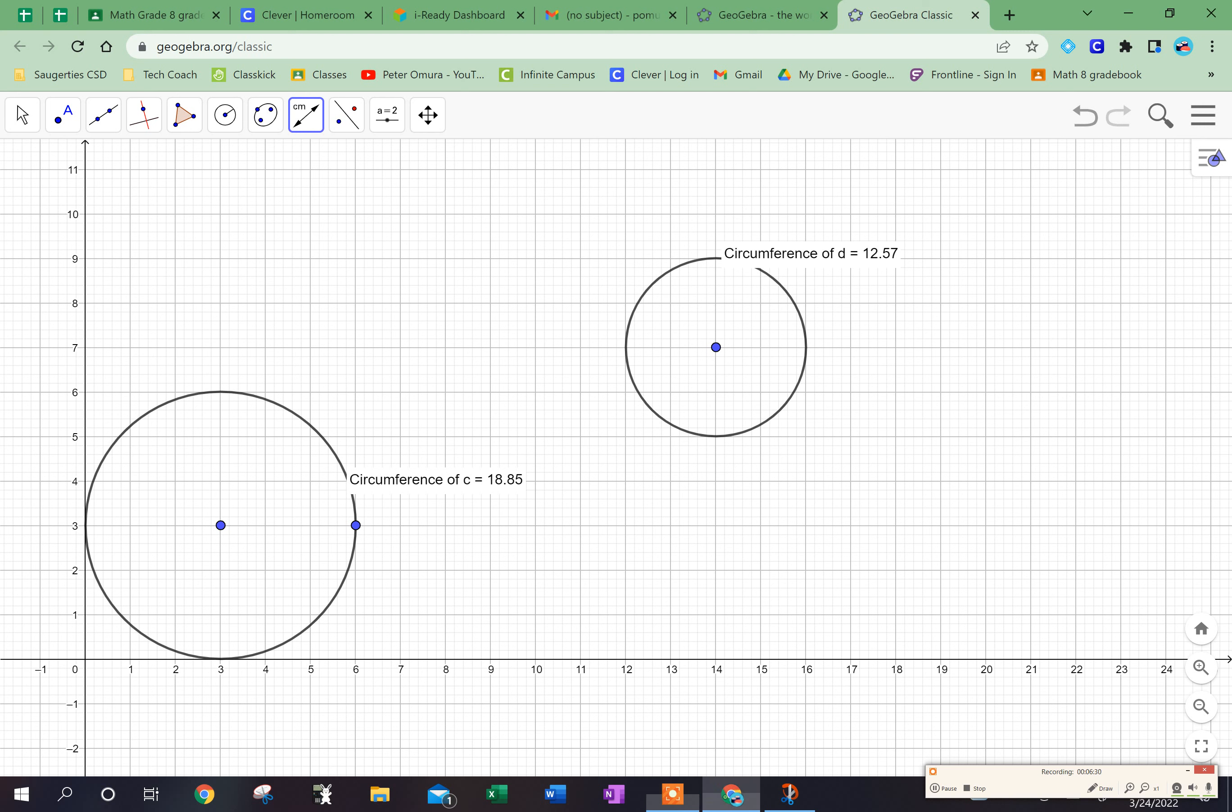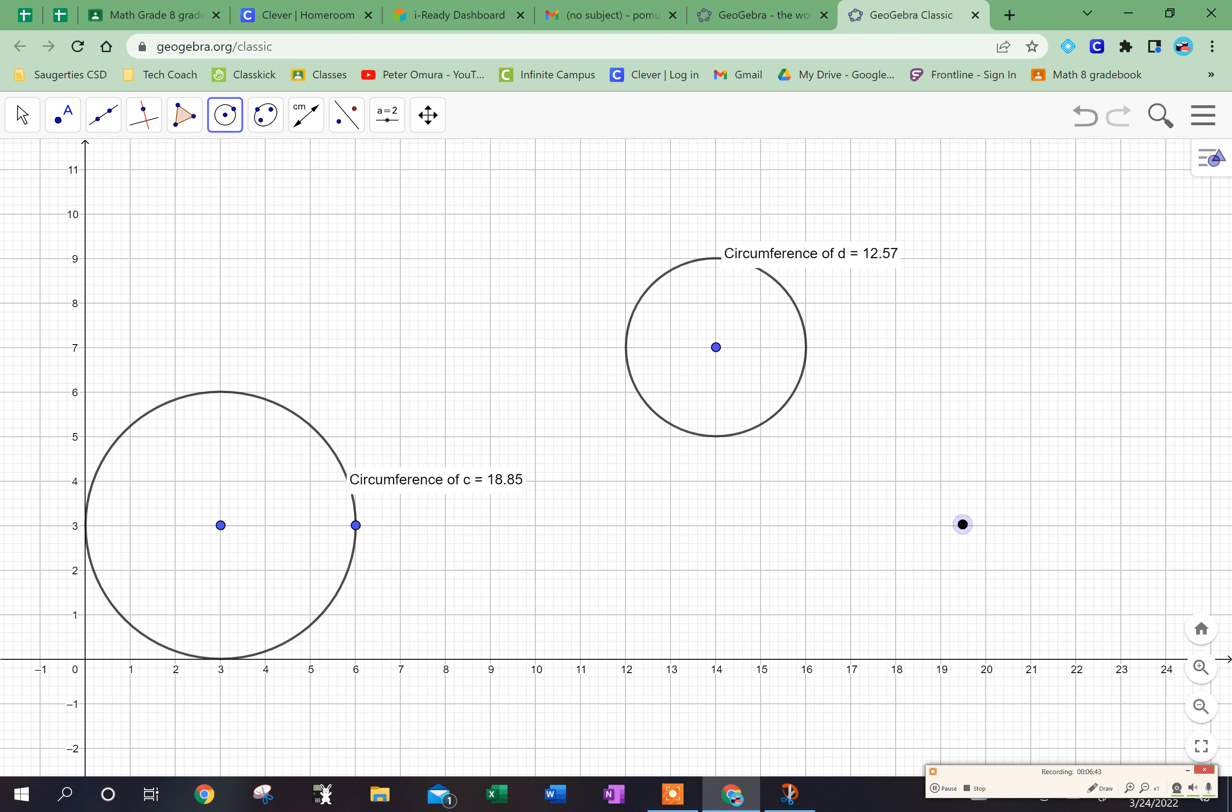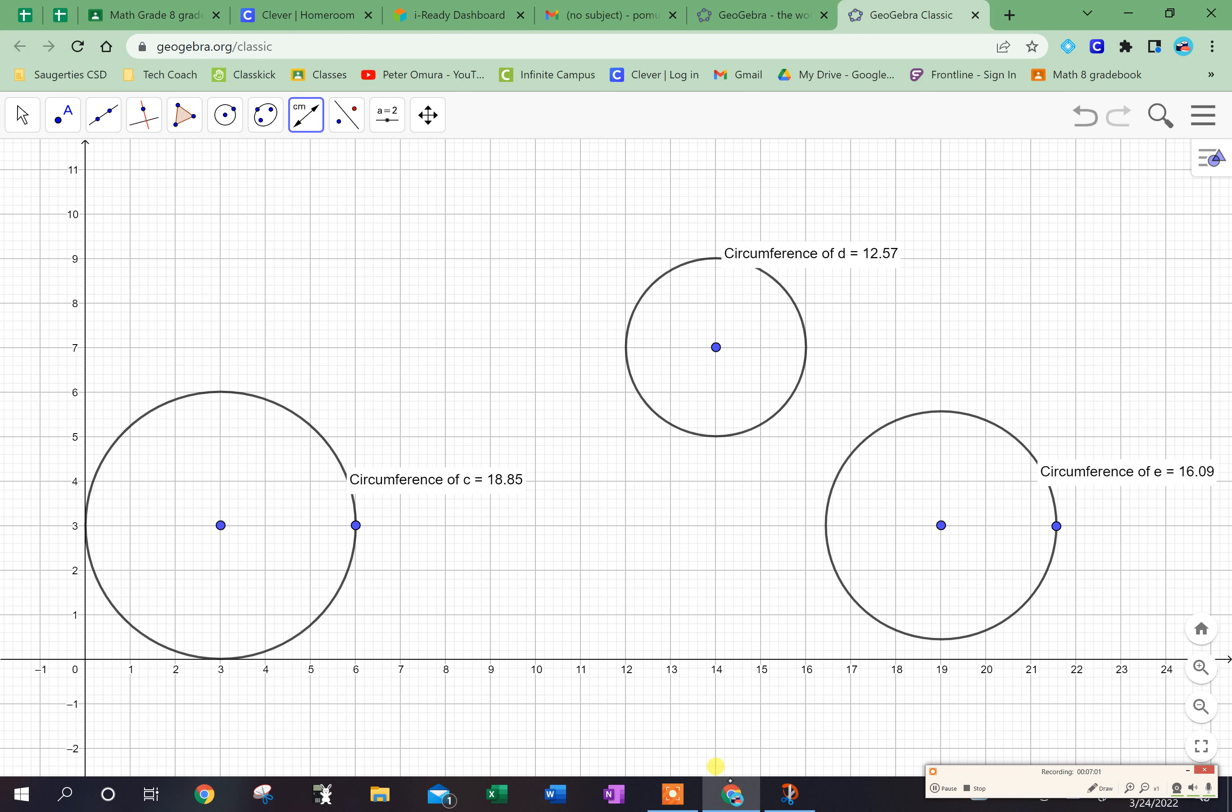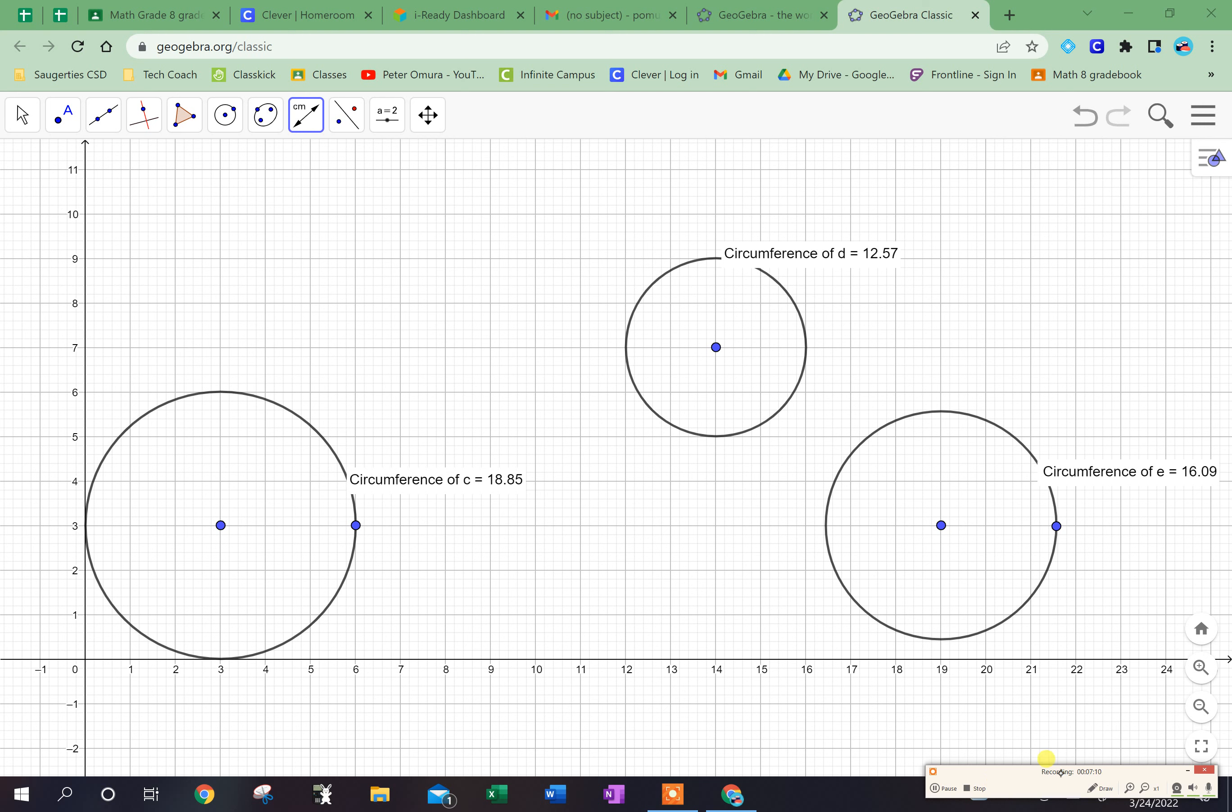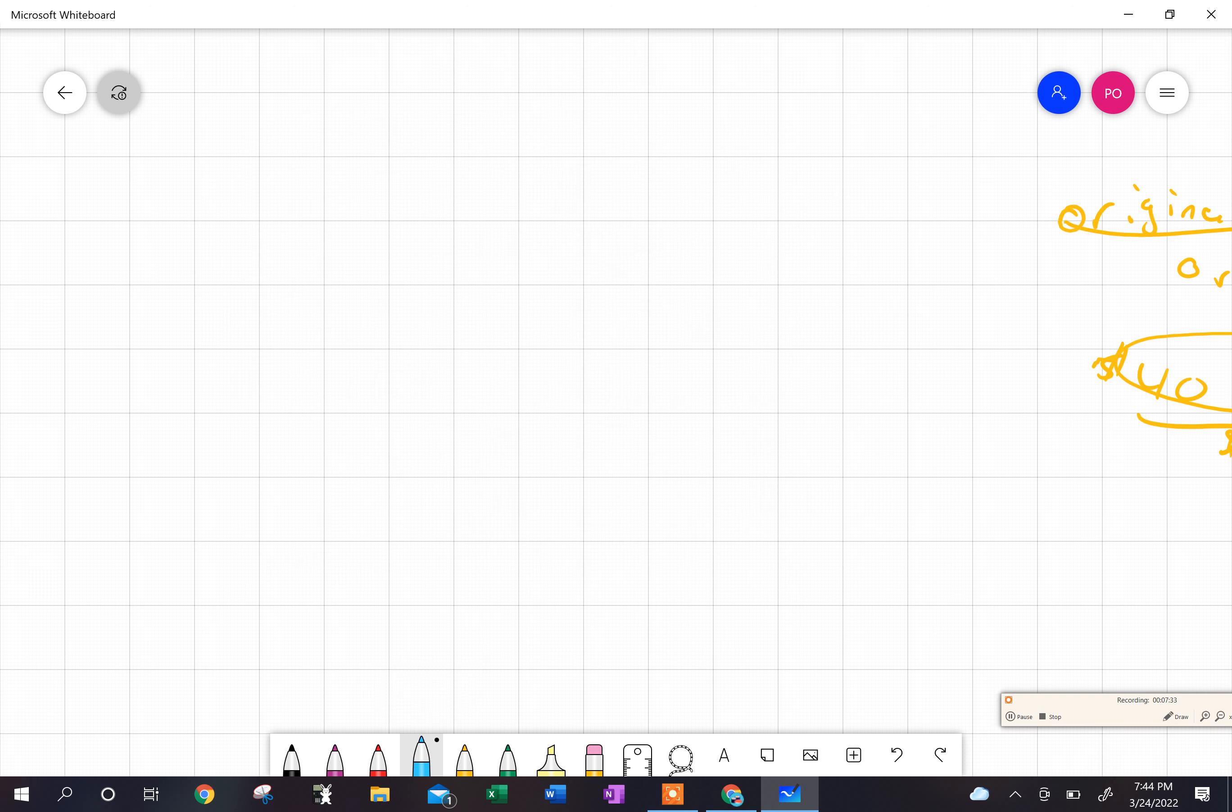18.85 centimeters, and so I'm going to stop right there. Actually no, I'm going to do one more thing, sorry. All right, so if my circumference is 16.09, I want to find out what's the radius.